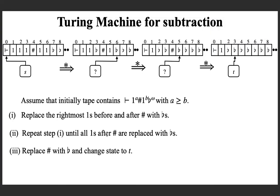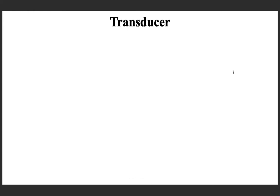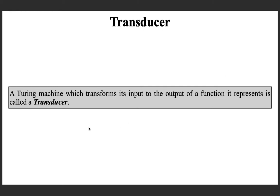At the end, we have a single one, which represents 3 minus 2. In general, if there are m ones and n ones with m greater than or equal to n, you will get m minus n ones remaining on the tape and you are in state t. We can now formally define: a Turing machine which transforms its input to the output of a function it represents is called a transducer.